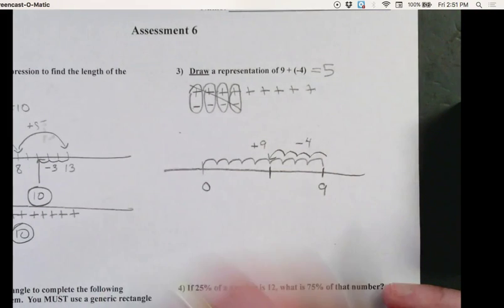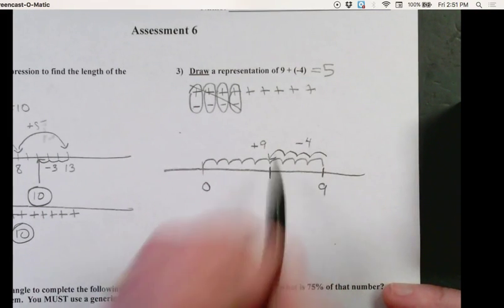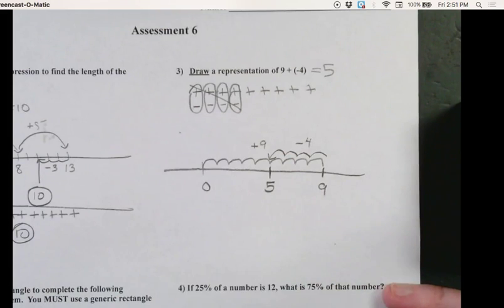Where are we right now? Well, if we went 4 units that way, we are at 5. And visually, there's my answer.